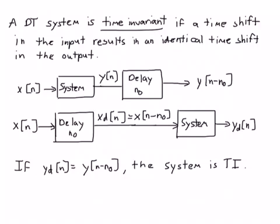Now consider doing things differently: instead of delaying after the system, we do the delay before. We take the input, delay it by n0 points to get xd(n), which is just x(n - n0), the time-shifted input. We then run that through the system to get yd(n). If yd(n) is exactly equal to y(n - n0), then the system is time invariant.